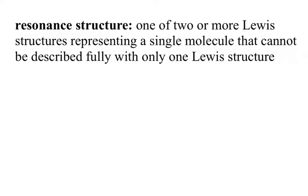Welcome, everyone. We're going to be talking about resonance in this lesson. A resonance structure would be one of two or more Lewis structures representing a single molecule that basically cannot be described fully with the use of only one Lewis structure. So whenever you can draw two or more Lewis dot structures to represent a single molecule, it's because it has resonance.